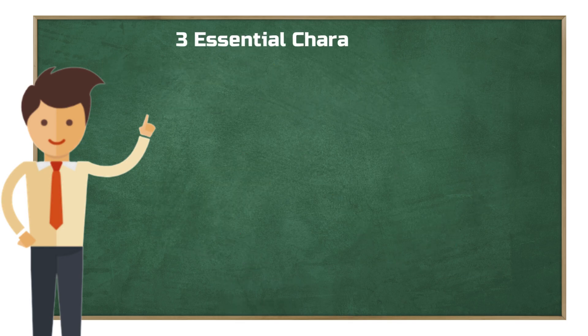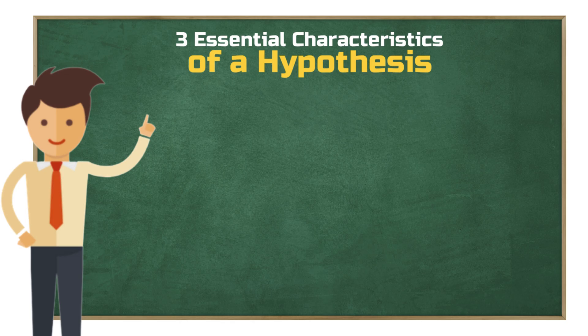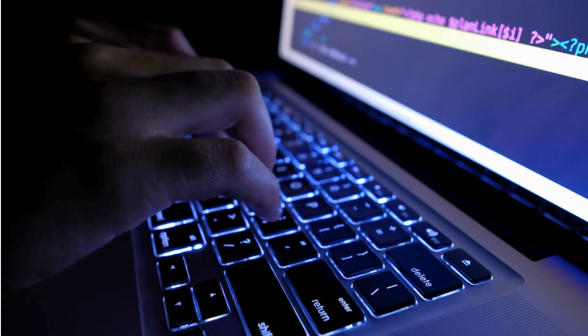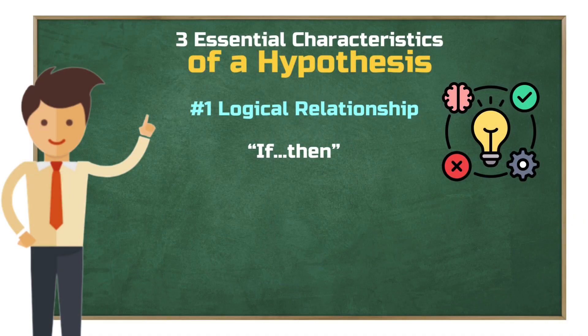Now let's talk about the three essential characteristics of a hypothesis. First, a hypothesis must contain a logical relationship. Since a hypothesis always reflects a relationship, it needs to follow a certain logic. The simplest logical structure is the if-then format. A hypothesis is nothing more than a logical construct expressed in natural language. For example, if variable A increases, then variable B decreases. Or simply, there is some kind of relationship between A and B.